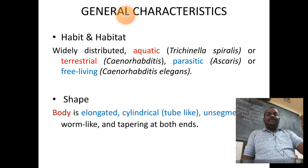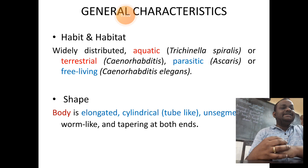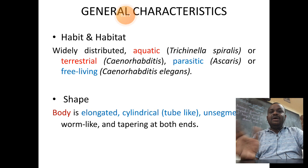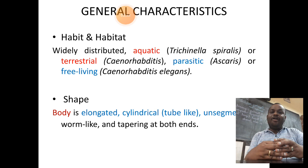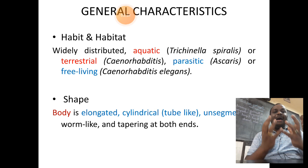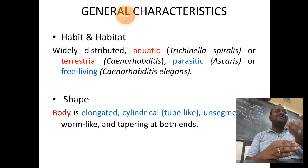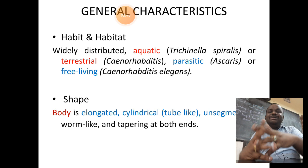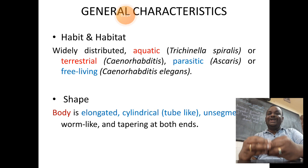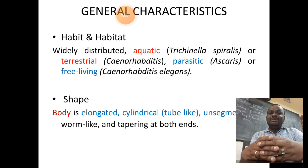Now we shall look into the general characteristics of Phylum Nematoda. General characteristics refer to the common features related to this particular group of organisms. To start with, habitat and habit: habit refers to the general appearance of an animal, while habitat refers to the dwelling place or living place. Nematodes are widely distributed and have an elongated, worm-like body.